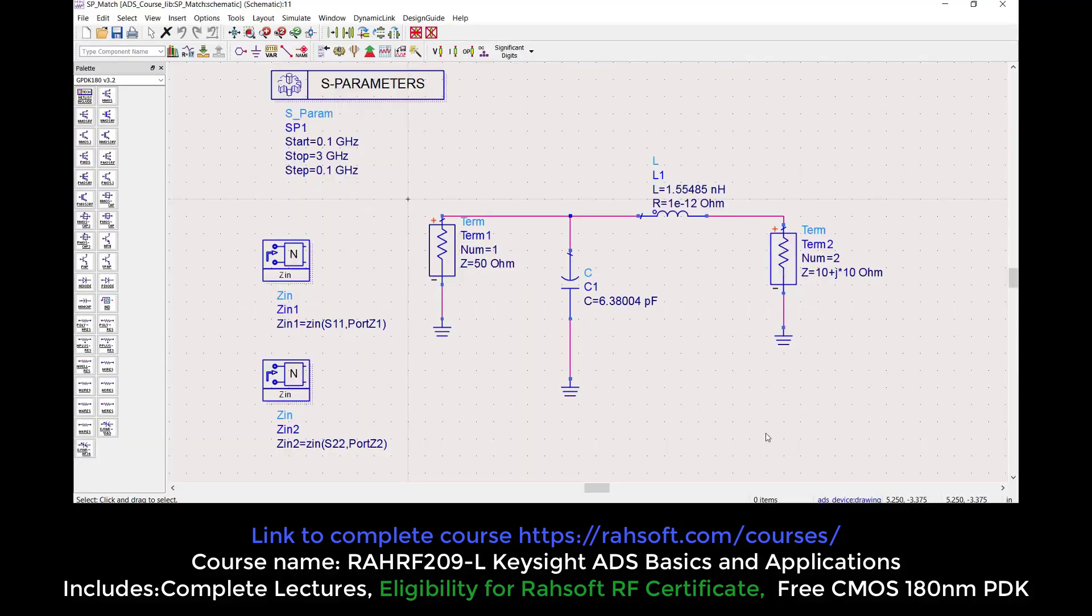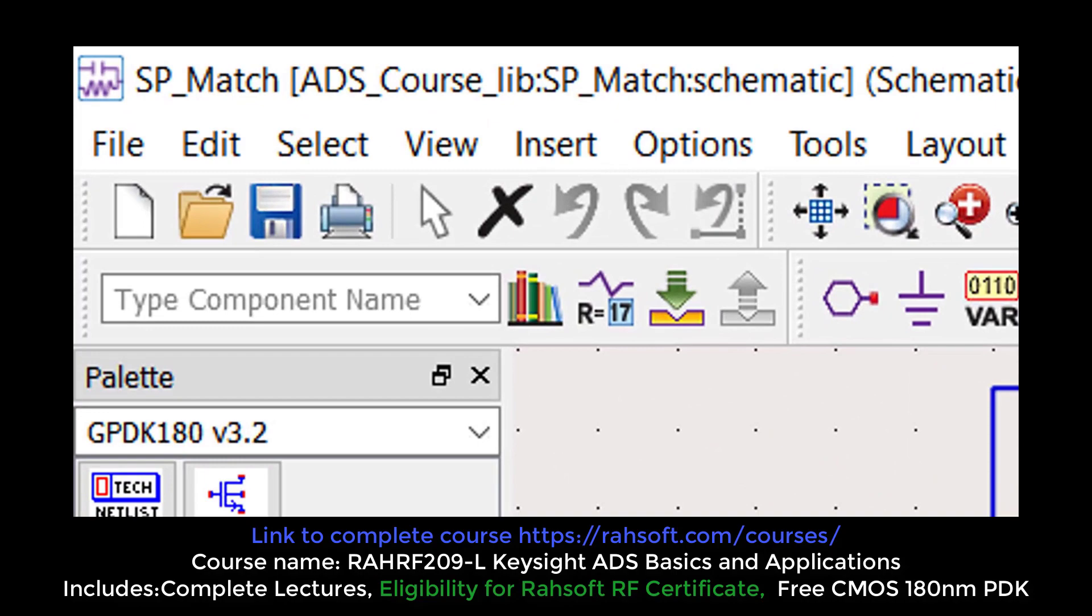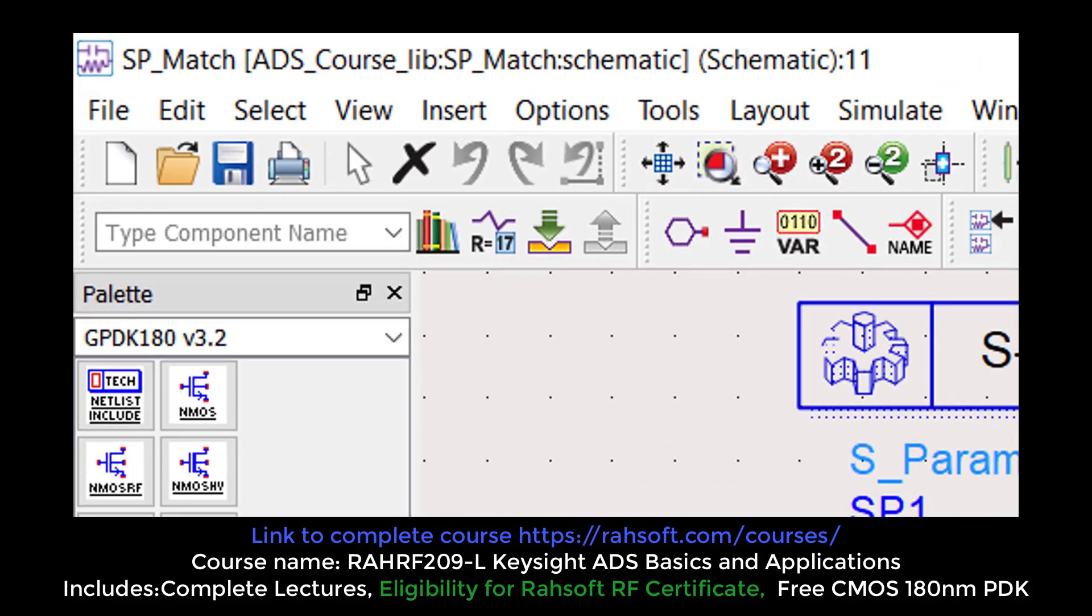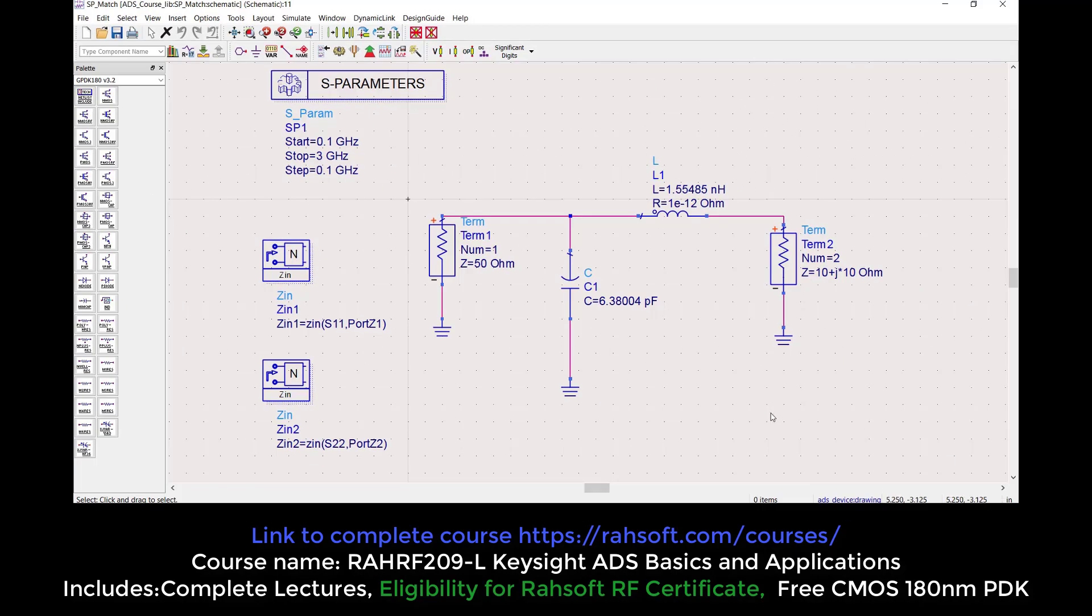This is the matching circuit I've prepared, named SP_match. For now, you don't have to worry about this matching circuit because in upcoming sections I'm going to explain how to design matching circuits using ADS software. But for now, we are going to measure the S-parameters for the circuit.